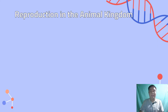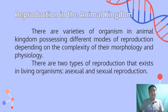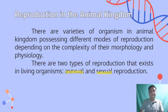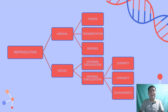Reproduction in the Animal Kingdom. There are varieties of organisms in the Animal Kingdom possessing different modes of reproduction depending on the complexity of their morphology and physiology. There are two types of reproduction that exist in living organisms, namely asexual and sexual reproduction. As based on the diagram, reproduction has two types: asexual and sexual reproduction.